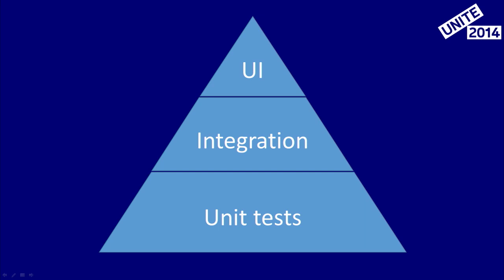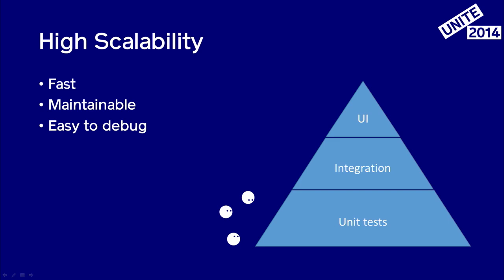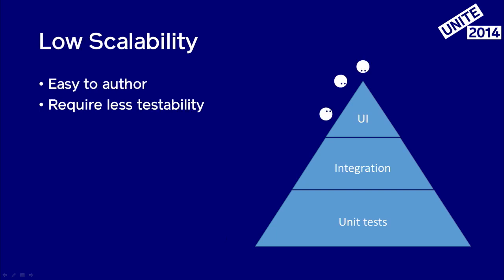The pyramid shows a healthy distribution of different kinds of tests you should have in your test suite and how you should structure them. The base of your test suite should be unit tests, and you should start with those, then move on to integration tests — which you don't need as many of — and then you need only a small amount of UI tests. That's of course the perfect situation.